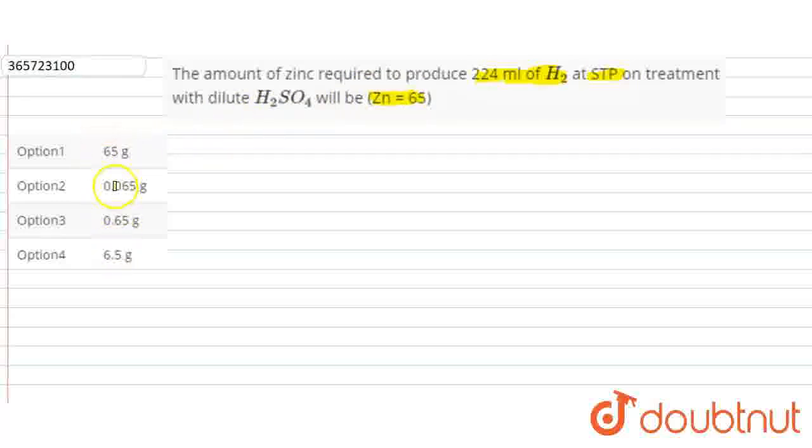So let me ask which option will be correct. First of all, let's see how zinc reacts with dilute H2SO4. What does it create with dilute H2SO4? This one is zinc, and the other one is H2.